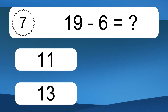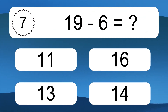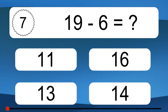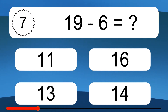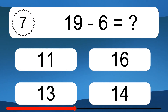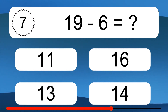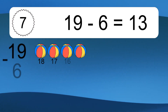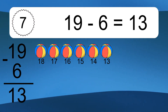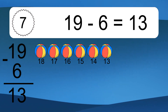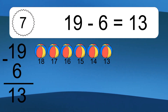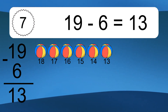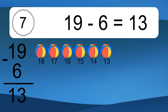19 minus 6 equals what? 19 minus 6 equals 13. Let's count it. 18, 17, 16, 15, 14, 13.